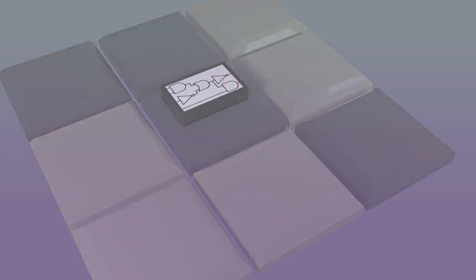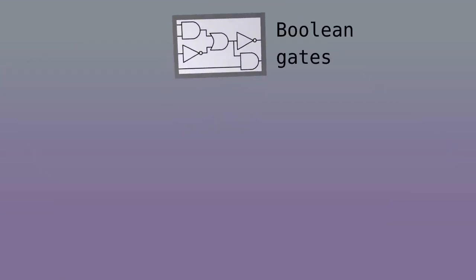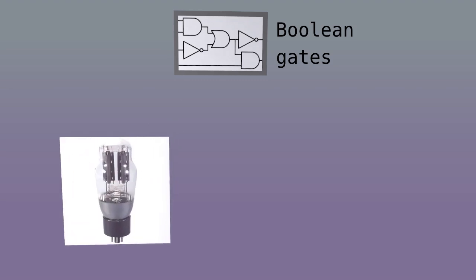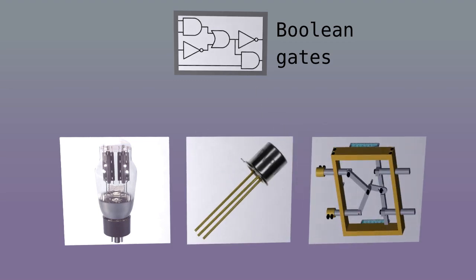Now the box itself can be implemented with Boolean gates. And the gates, in turn, can be implemented in different technologies, such as vacuum tubes, transistors, or even some mechanical device.